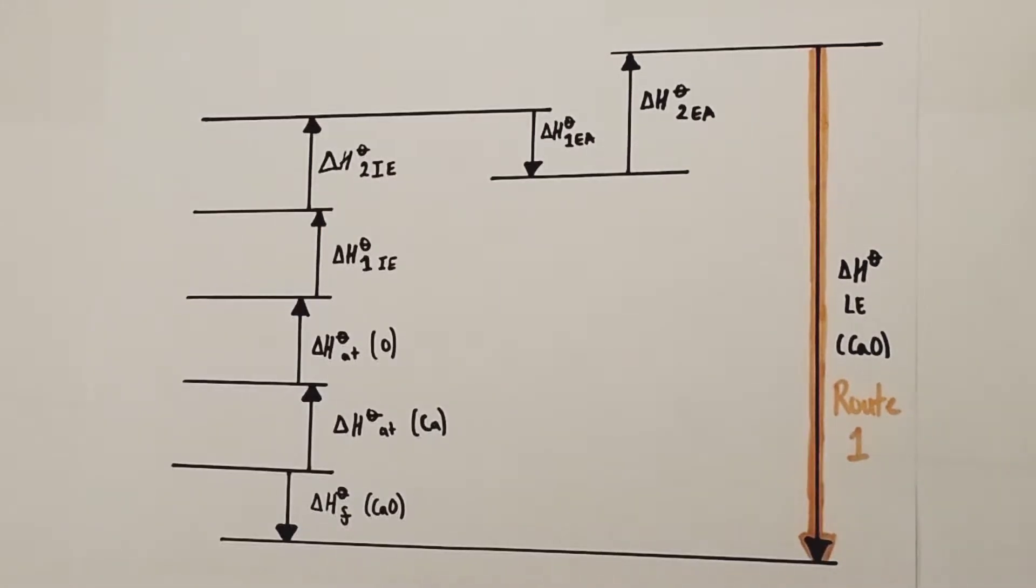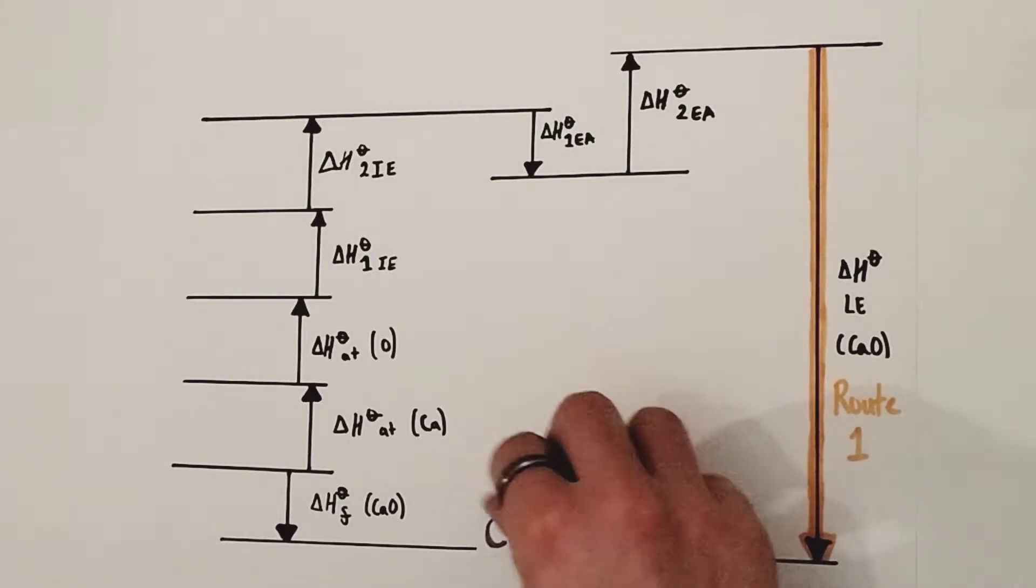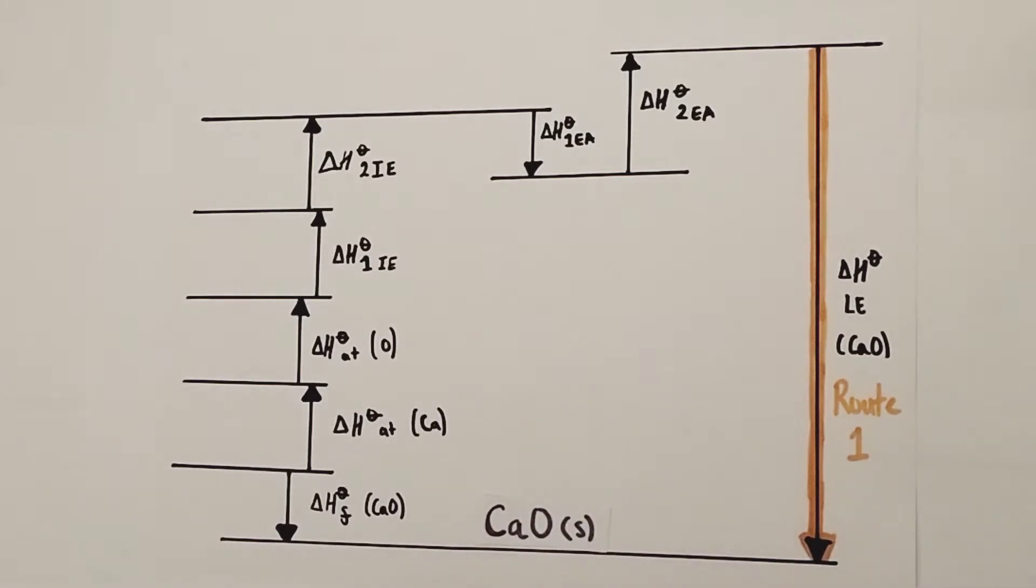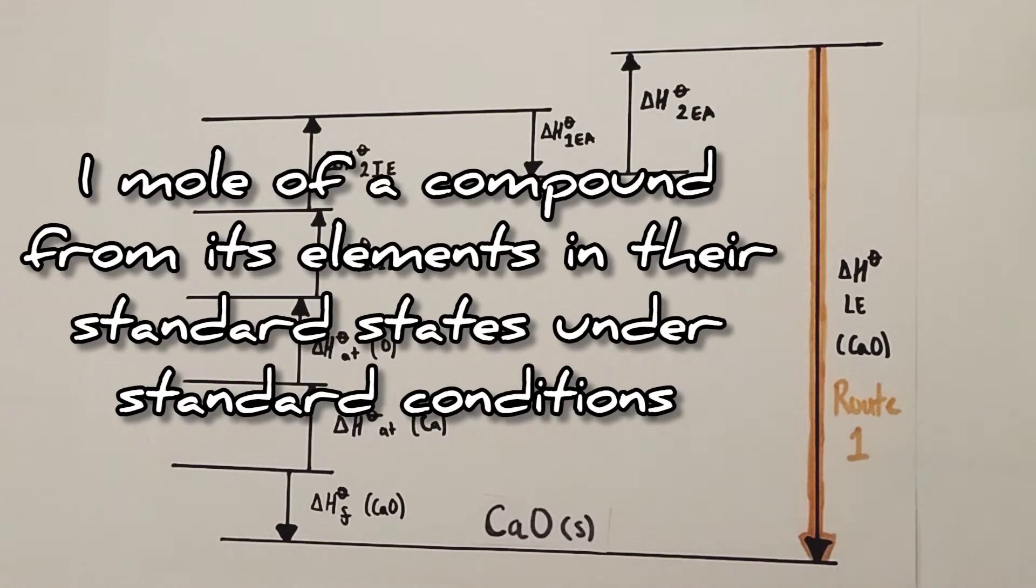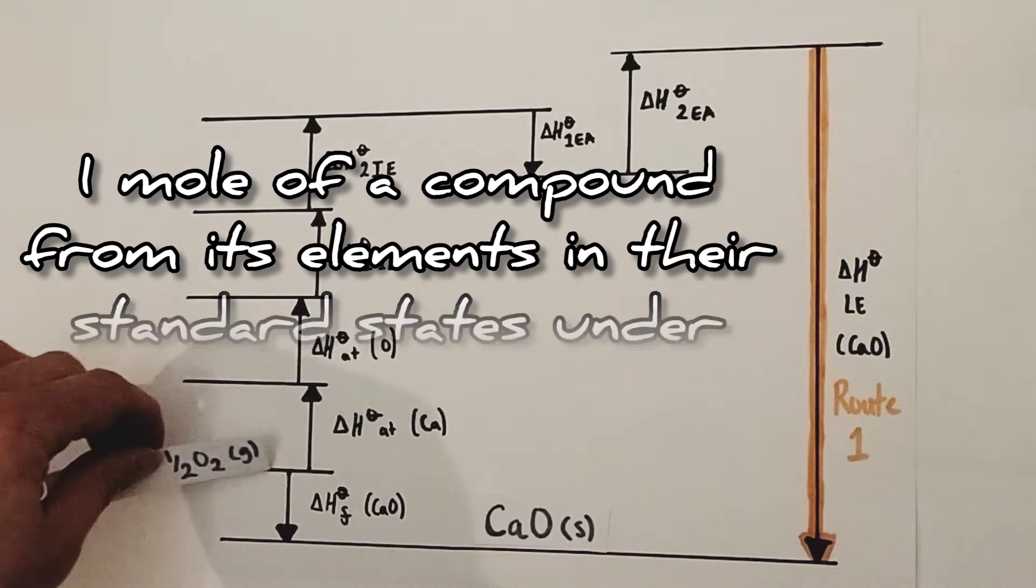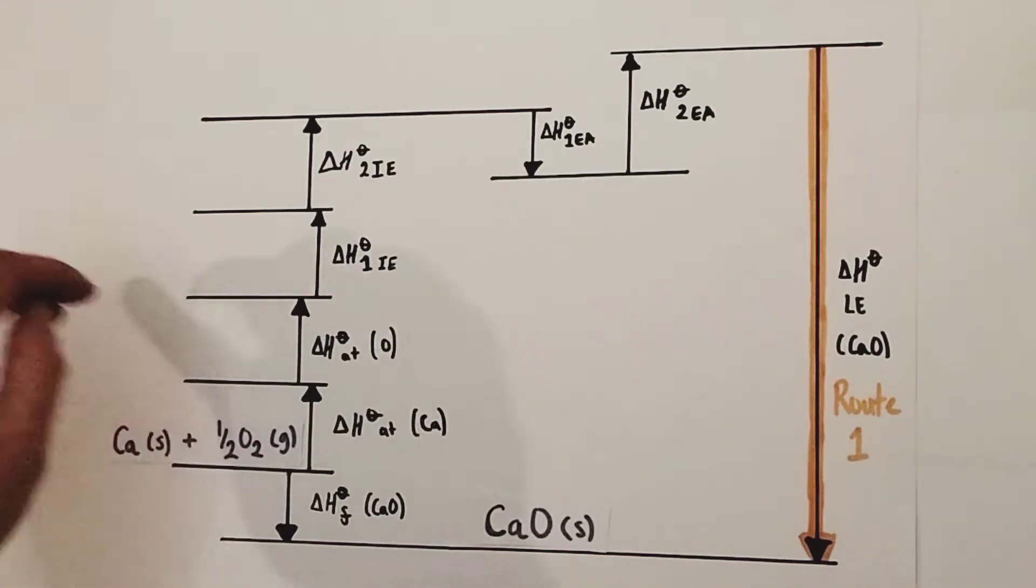So I'm going to start in the bottom left hand corner with the enthalpy change of formation of Calcium Oxide. I'll place the formula of Calcium Oxide on the baseline here, which is CaO solid. That's one mole of Calcium Oxide ionic compound, which is a giant ionic lattice structure. The enthalpy change of formation is defined as the enthalpy change for the formation of one mole of an ionic compound from its elements in their standard states under standard conditions. So here are my elements in their standard states: calcium solid because it's a metal,